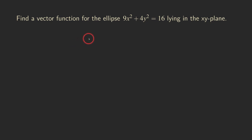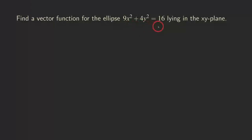Hello everyone, it's Wilson here. Today I want to talk about how to find a vector function, or finding a parameterization for the ellipse that's lying in the xy plane. The ellipse equation is 9x squared plus 4y squared is equal to 16. To keep things simple, we are going to do one lying in the xy plane, and we will do more complicated ones in the future, like the tilted circle or the tilted ellipse.